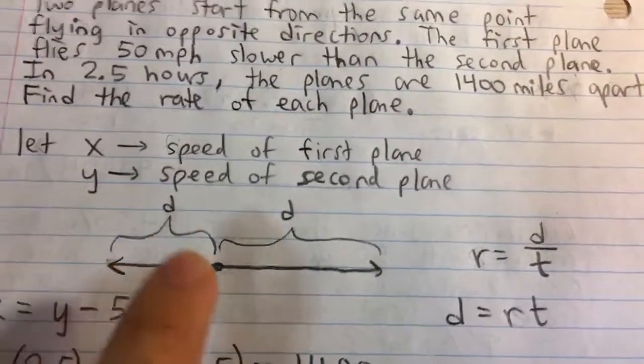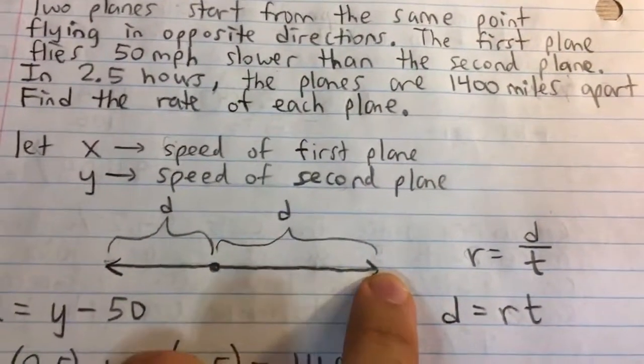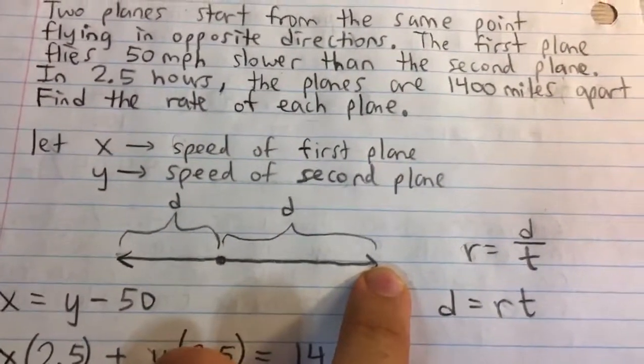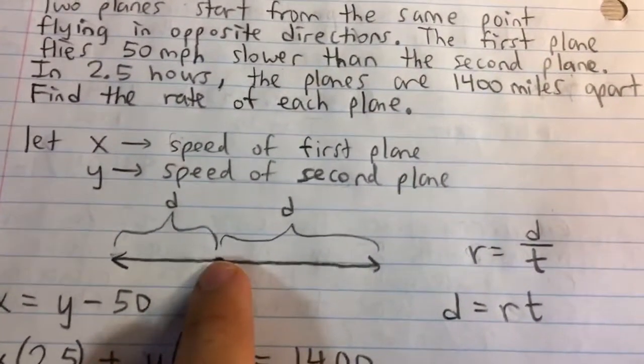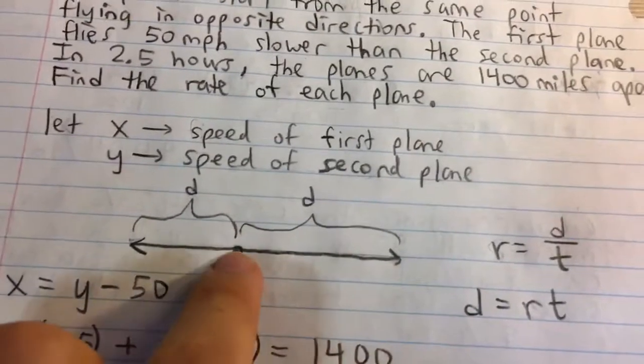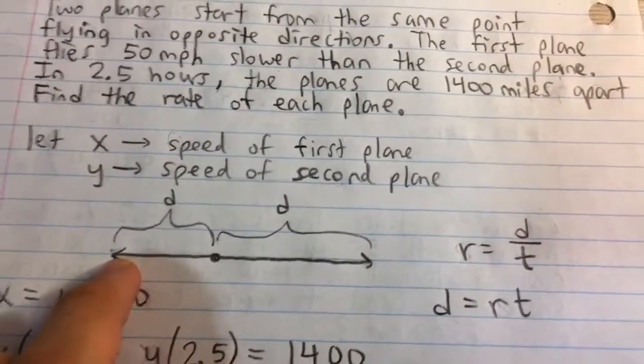That means from here all the way to here is 1,400 miles. Another way to express that is the distance traveled by the first plane plus the distance traveled by the second plane is equal to 1,400.